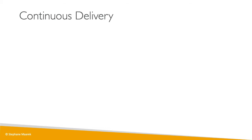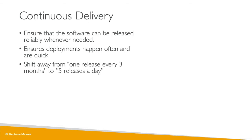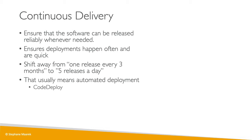Now we have continuous delivery. We want to make sure that whenever our software is built, it can be released reliably whenever we need. We want deployments to happen very often and quickly — moving away from one release every three months to doing five releases a day. You can only do five releases a day if you have continuous delivery, which means deployment will be fully automated using technology such as CodeDeploy, Jenkins, Spinnaker, etc.